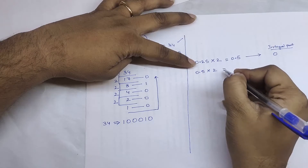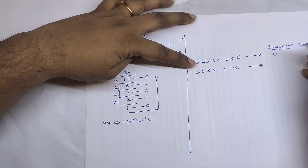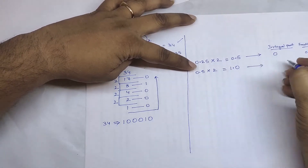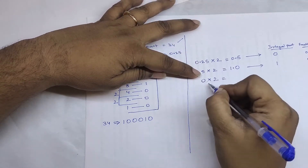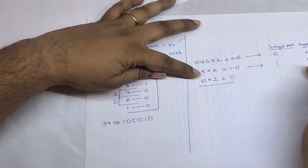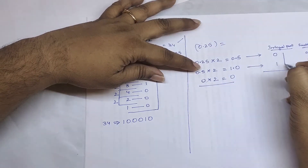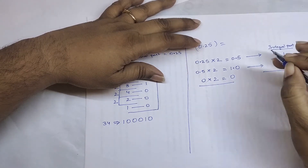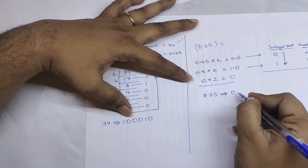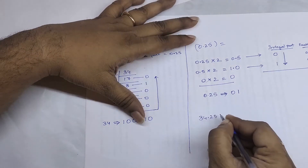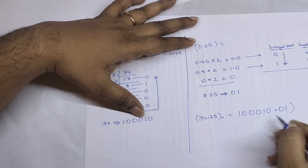Multiply 0.5 by two again: 0.5 × 2 = 1.0. Divide the integral and fractional parts — integral part is 1, fractional part is 0. Since the fractional part is now zero, we can stop; the termination is complete. The binary format of 0.25 is arranged from top to bottom: 0.01. So the full binary conversion of 34.25 is 100010.01.